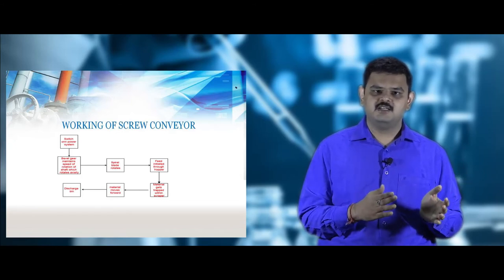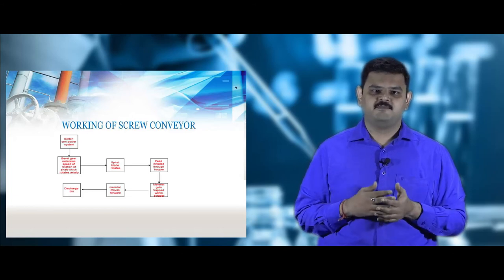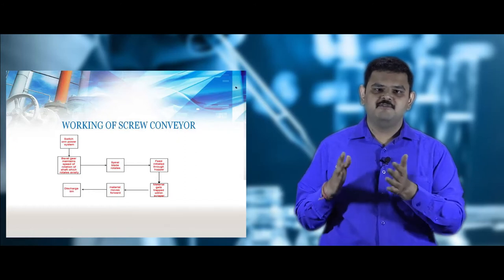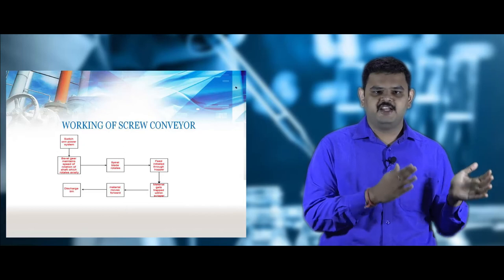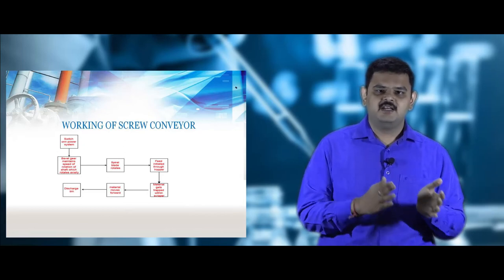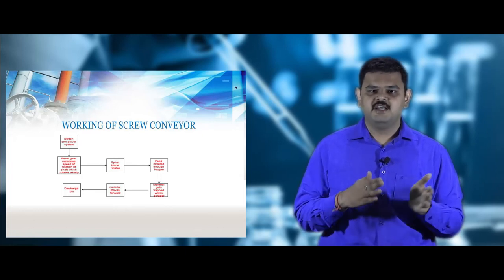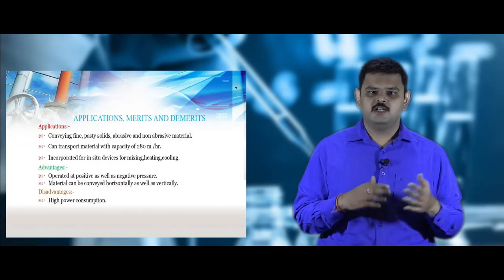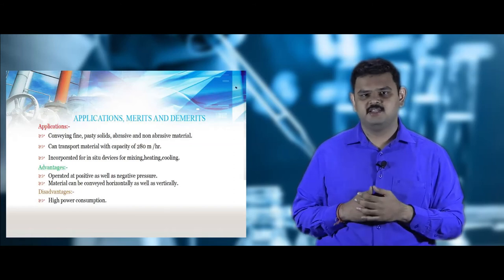In the working of the screw conveyor, it is switched on and the bevel gear regulates the speed of the shaft. The shaft rotates axially, causing the welded helical coil to rotate from the feed end to the discharge end. The feed gets trapped in the helical coil, moves forward with the helical motion induced by the shaft, and is collected at the discharge.